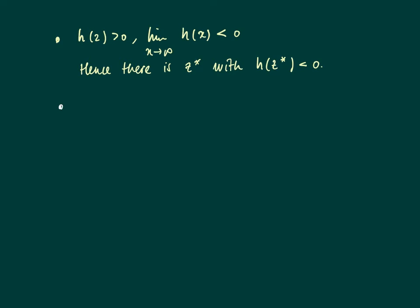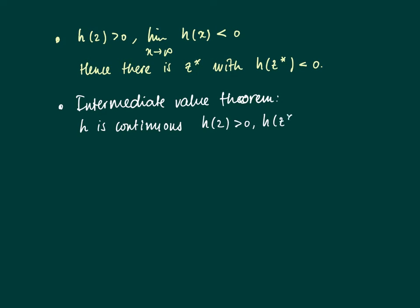We have a positive value and a negative value for a differentiable, continuous function. The Intermediate Value Theorem implies that since H is continuous with a positive and negative value, there should be something on the interval [2, Z*].